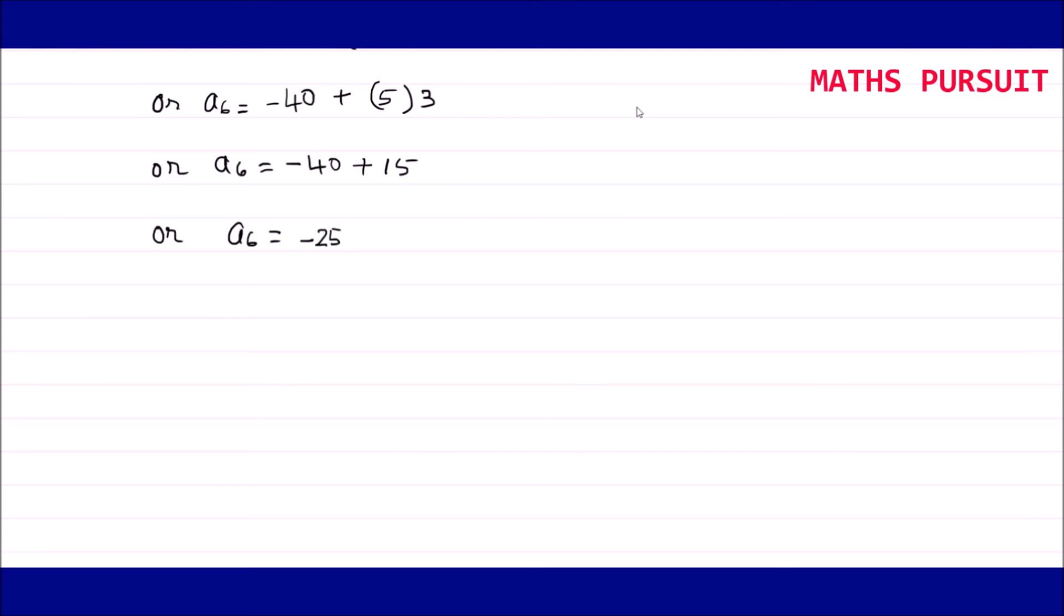You could see that how easily we are able to derive the value for the sixth term. We got the value for sixth term is -25. So therefore we can write, therefore the value of the sixth term of this given A.P. or arithmetic progression is -25.